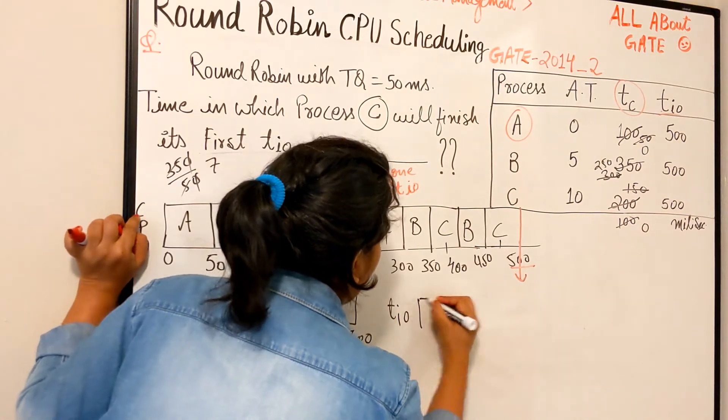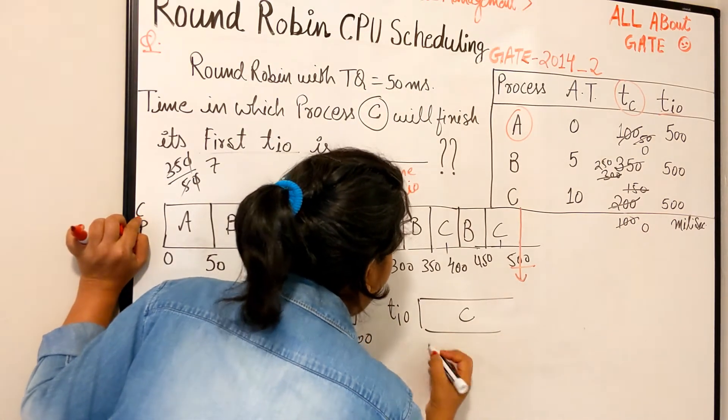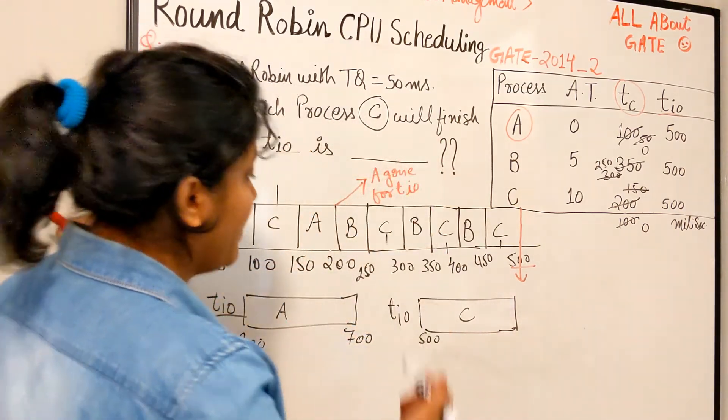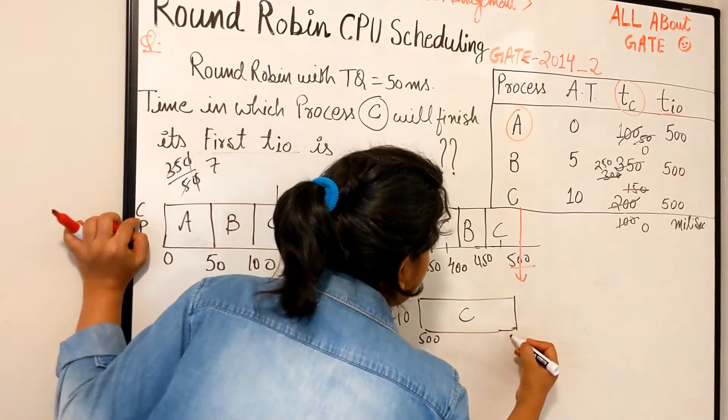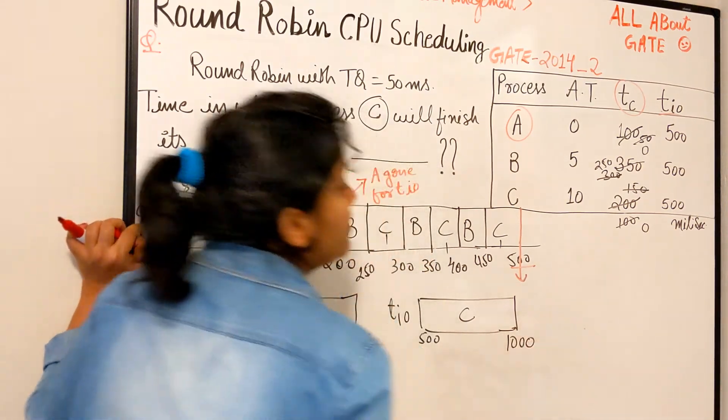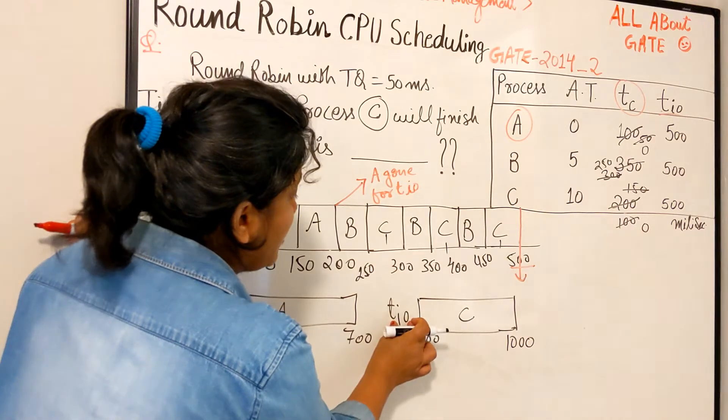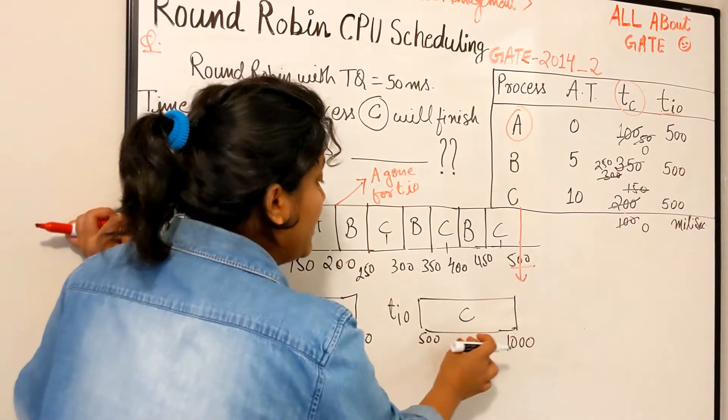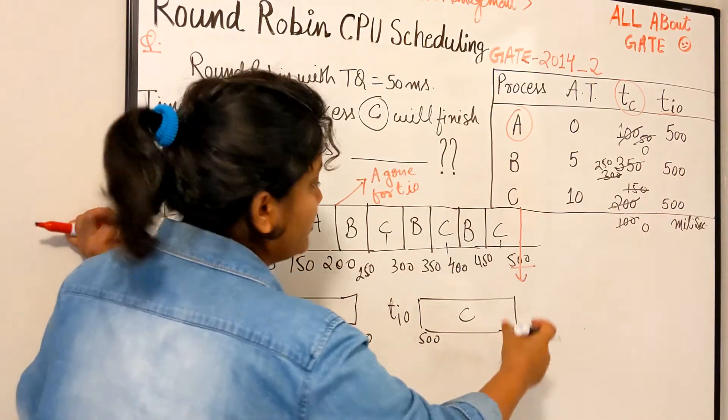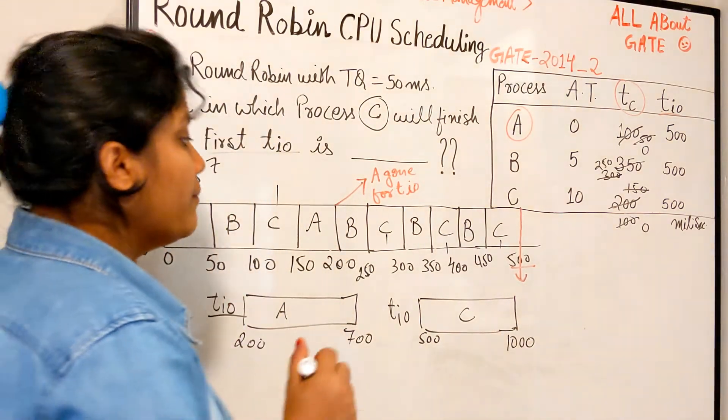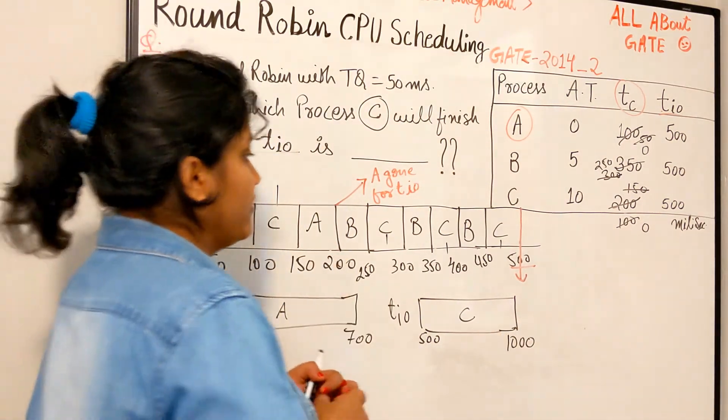Now C is also allowed to go for its IO. So now here on the IO, C is going at time 500, right? And each TIO needs how much? 500. So it goes at this and it finishes by 1000, because 500 plus 500. It started input-output operation at 500, it needs 500 milliseconds to consume.